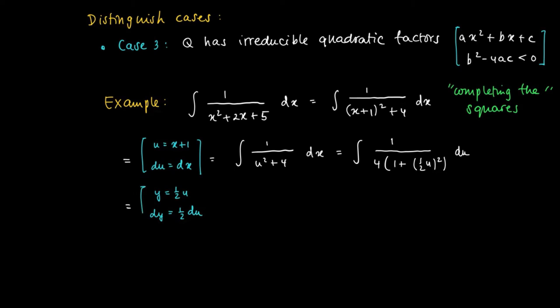We carry out the following substitution: we substitute y is a half times u, so that dy equals a half times du. Slowly we are moving into a constant times something that is the derivative of the arc tangent. We are left with the integral 1 over 2 times 1 over 1 plus y squared, which has as primitive a half times the arc tangent y plus an integration constant.